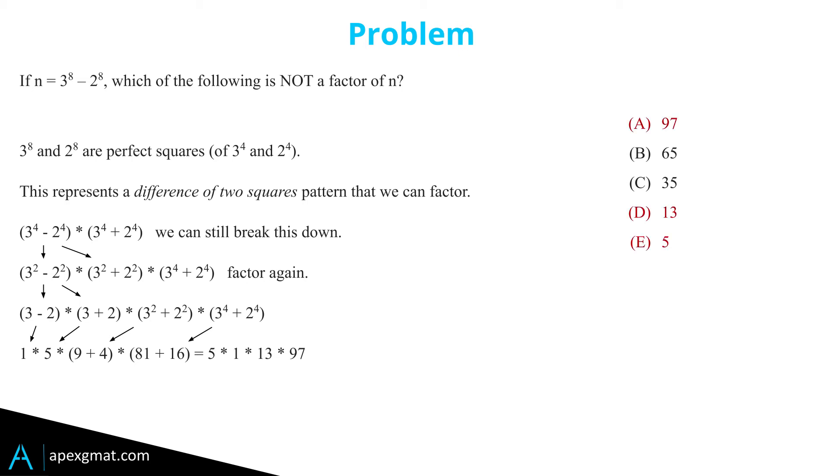So now we've eliminated everything except B and C, 65 and 35. This is where the other piece of knowledge comes in.